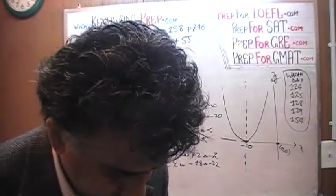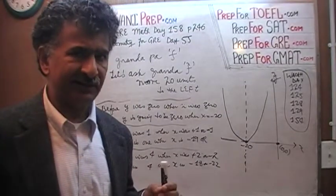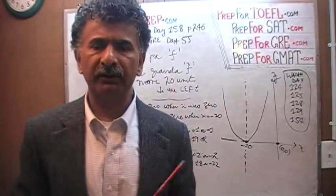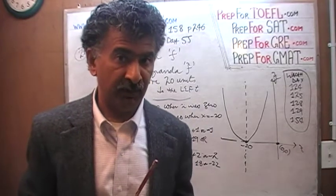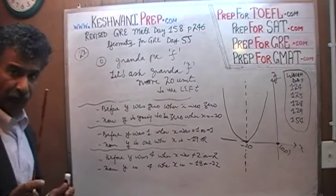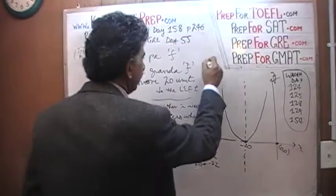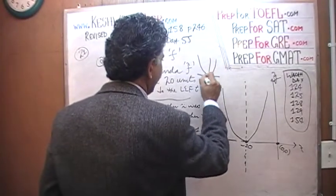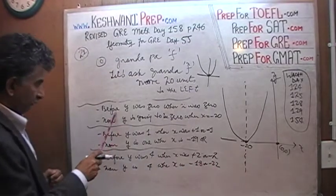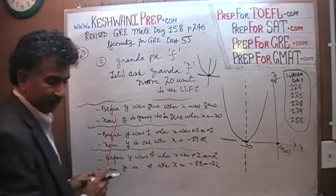Now listen very carefully. Once you understand this concept once, all the transitions of shifts left and right are going to be a snap. You will know right away just by looking at it that it is a parabola, and precisely where it is being shifted. Before, y was 0 when x was 0. Now, y is 0 when x is negative 20. So the question is, how do we represent that in our new function?